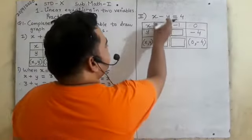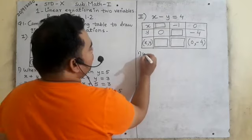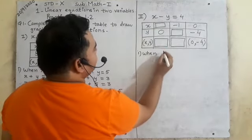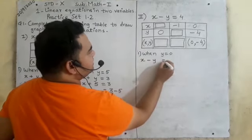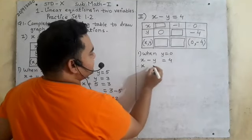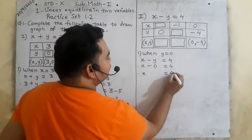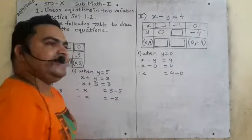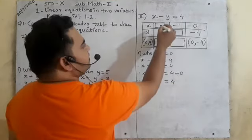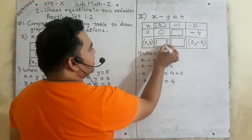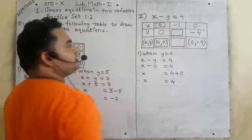Now see the second equation, x minus y equals 4. It has three columns. For the first column, y equals 0. Using x minus y equals 4: x minus 0 equals 4. Since 0 cannot be subtracted, x equals 4. So the coordinate is 4 comma 0.